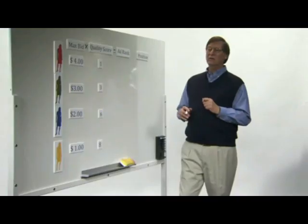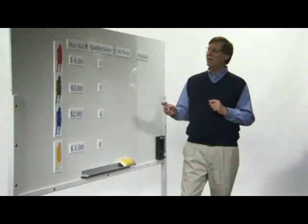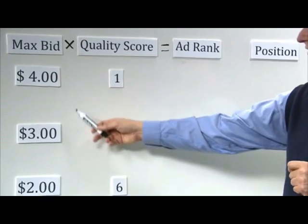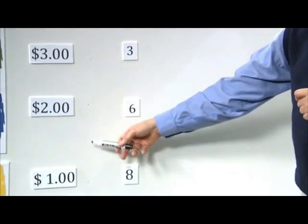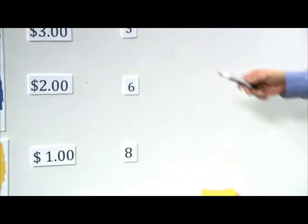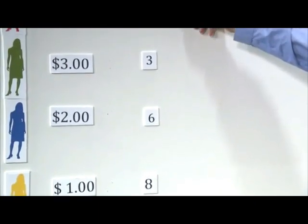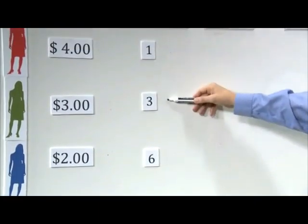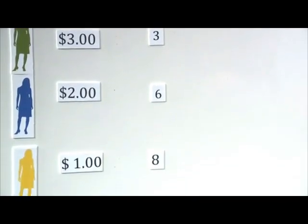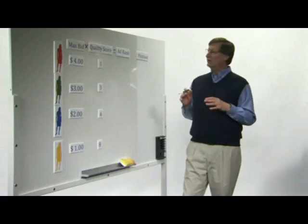So in this particular example, I've got four advertisers. They're bidding four, three, two, and one, and the ads have different quality. In this case, it's a quality of one, three, six, and eight. So to determine the ad rank, we just multiply those two numbers together.